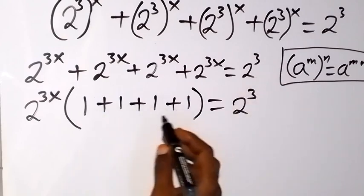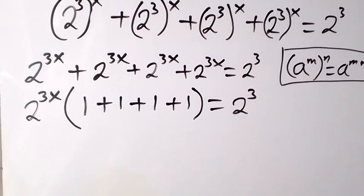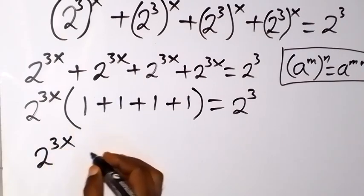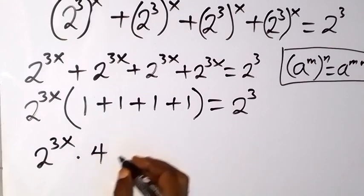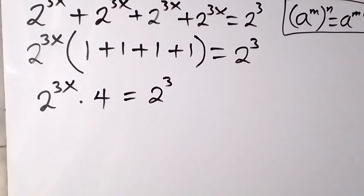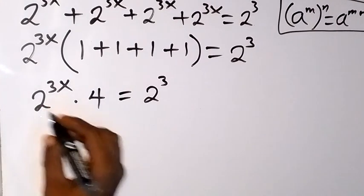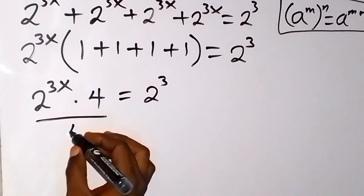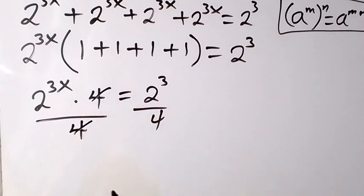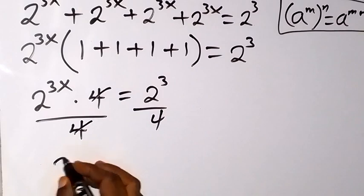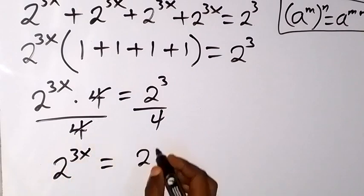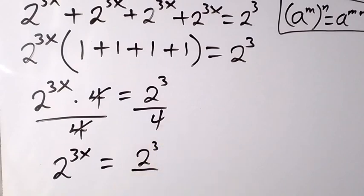Now, 1 + 1 + 1 + 1 gives us 4. So this can be written as 2^(3x) times 4 equals 2^3. We then divide both sides by 4. The 4s cancel, leaving us with 2^(3x) equals 2^3 over 4. And 4 can be written as 2^2.